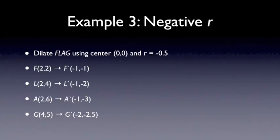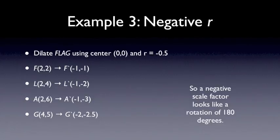And so we see, for example, F used to be 2, 2. It maps to negative 1, negative 1. So a negative scale factor kind of looks like a rotation of 180 degrees around the origin in addition to stretching or shrinking.